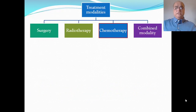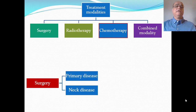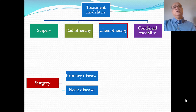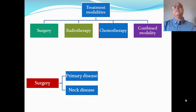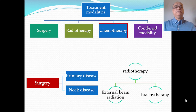Treatment modalities include surgery, radiotherapy, and chemotherapy as combined modalities. Surgery for the primary tumor, and if neck lymph nodes are involved, surgery for those lymph nodes as well — whether selective neck dissection, modified radical neck dissection, or radical neck dissection, depending upon the stage of nodal involvement.